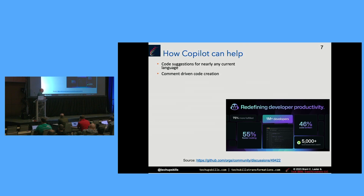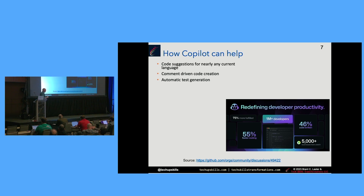Comment-driven code creation: you can supply a comment to Copilot like 'define a function that checks a URL to see if it's valid,' and it can generate suggested code for that. Automatic test generation: Copilot can generate unit tests based off your context. You have to look at them to make sure they're the right ones, but you can have it generate as many unit tests as you want, and give you ideas. You can tell it to give you five unit tests, or a test that tests for an invalid value.